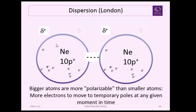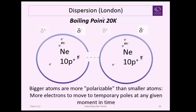this attraction can set up. Now if you get something that's a little larger now I've got neon so there now there's more electrons involved there's more probability for these temporary dipoles showing up the boiling point goes up